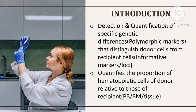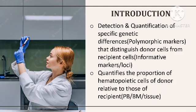What is chimerism? It is used for the detection and quantification of specific genetic differences or polymorphic markers that distinguish donor cells from recipient cells. These markers are called informative markers. We try to quantify the proportion of hematopoietic cells of the donor in relation to the recipient, from peripheral blood, bone marrow, or tissue.